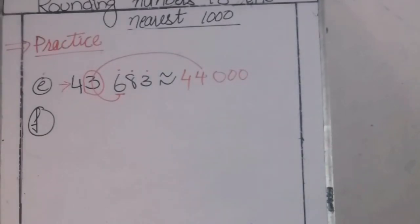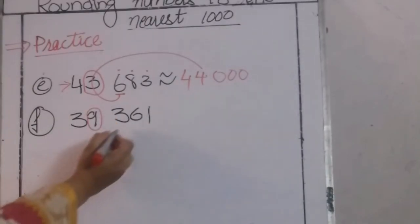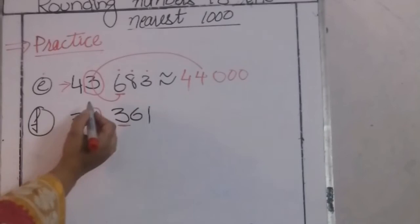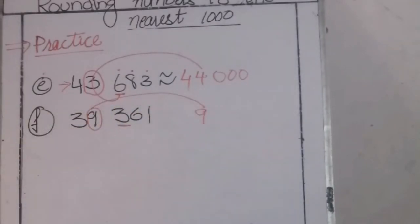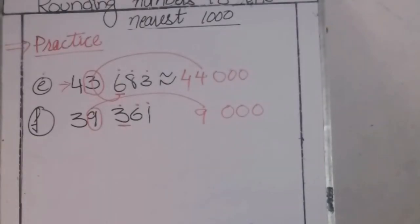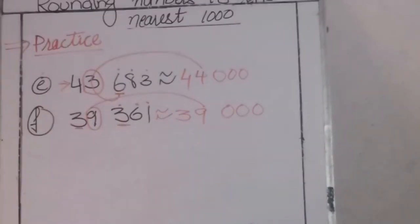Part F: 39,361. First, circle the digit at the 1000 place and underline the digit at the 100 place — the digit next to the circled digit. The underlined digit is a weak number, so it can't push the 9. The 9 remains the same. We write three zeros after the circled digit because all digits after the circled digit become 0 in the final answer, and the digit before the circled digit remains the same. So 39,361 becomes 39,000.